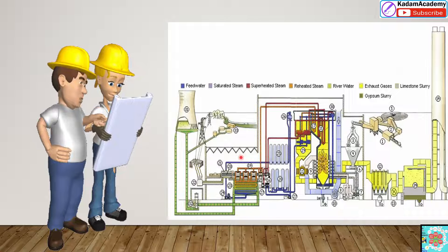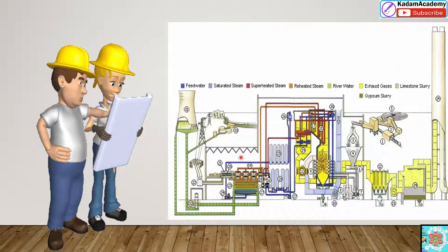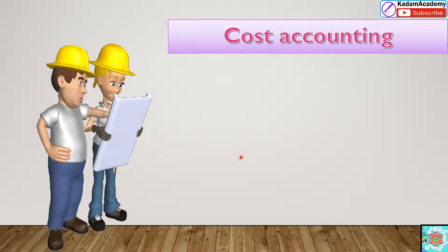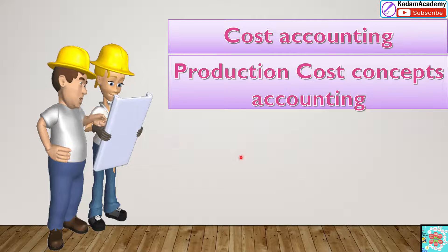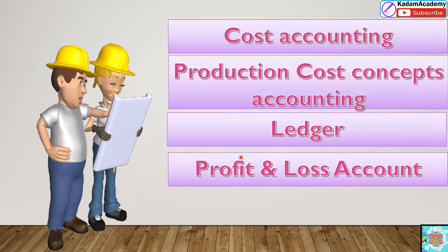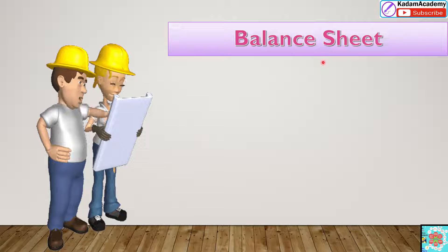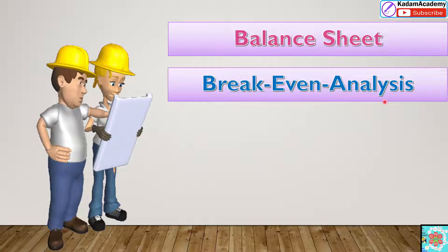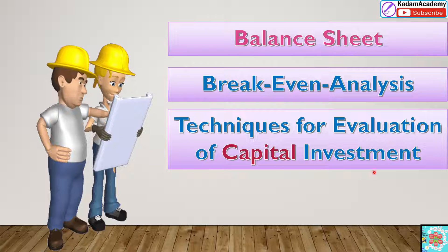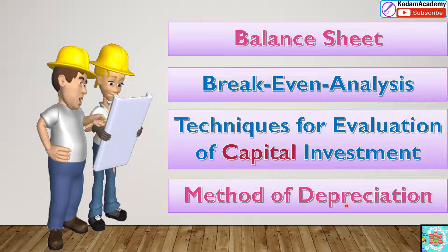For the engineering process, every engineer has to offer an economical solution. Engineers in industry and enterprise must have knowledge of cost accounting — production cost concepts, accounting, ledger, profit and loss account, balance sheet, break-even analysis, techniques for regulation of capital, and methods of depreciation.